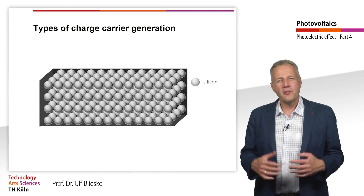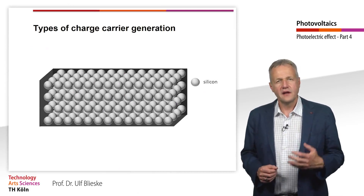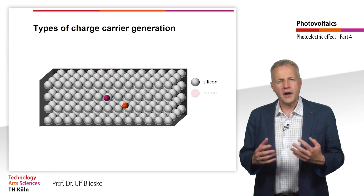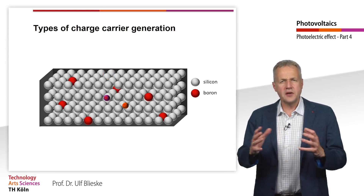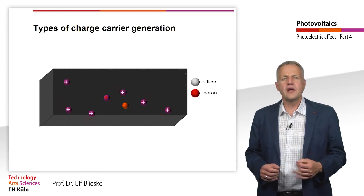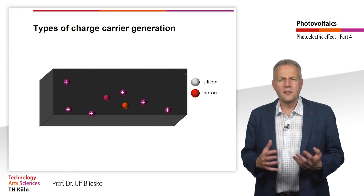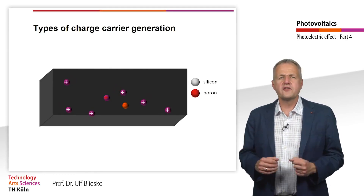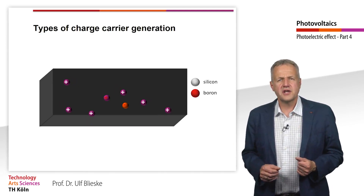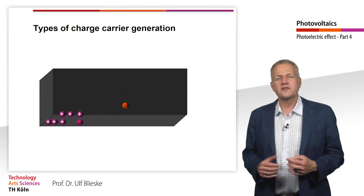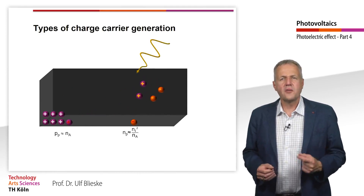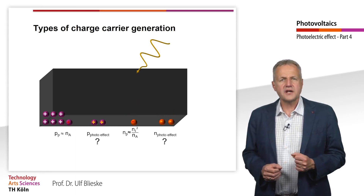We have now learned about the following formation phenomena of charge carriers. Electron-hole pairs are formed in an intrinsic semiconductor by thermal excitation. By doping an intrinsic semiconductor, foreign atoms — here boron — are introduced into the semiconductor, here silicon. We only look at the additionally introduced holes, the number of which roughly corresponds to the number of doping atoms. For the majority carriers, the concentration corresponds to the density of doped atoms, while the density of thermally generated charge carriers is obtained using the intrinsic charge carrier density.